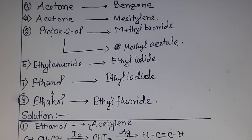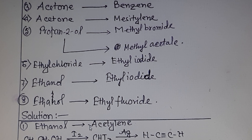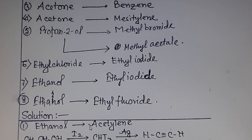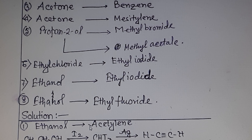The third one is acetone to benzene. Next, acetone to mesitylene. The fifth problem is propan-1-ol to methyl bromide, and again propan-1-ol to methyl acetate. The sixth problem is asking for the conversion of ethyl chloride to ethyl iodide, and the seventh problem is ethanol to ethyl iodide.